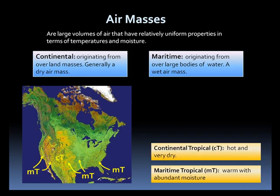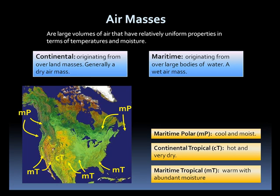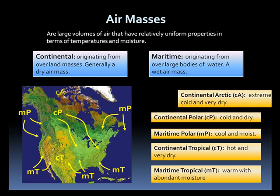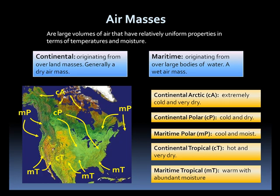Continental tropical: hot and very dry. Maritime polar: cool and moist. Continental polar: cool and dry. And continental arctic: extremely cold and very dry.